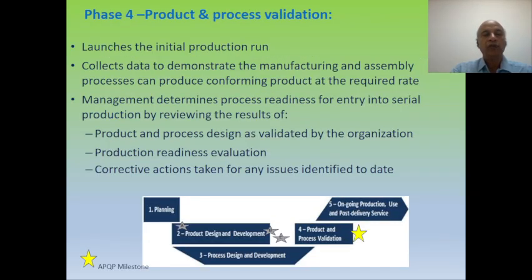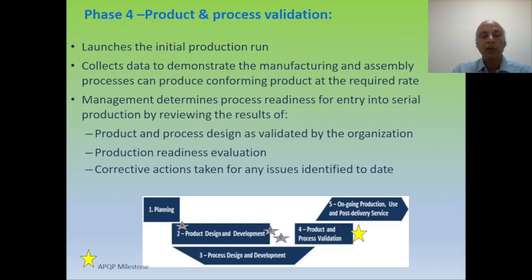Phase four launches the initial production run — also called trial production. Here we collect data to demonstrate that the manufacturing and assembly process can produce a conforming product at the required run rate per customer requirements. Management determines process readiness — whether all resources are available to enter serial production — by reviewing results of trials, including product and process design validation, production readiness evaluation, and corrective actions taken for any issues identified during earlier phases of new product development. Before entering SOP, every issue must be closed before the end of this phase.